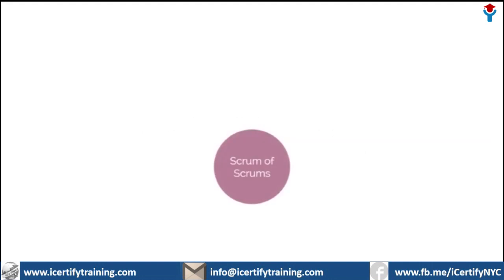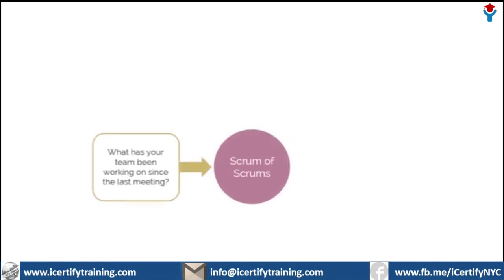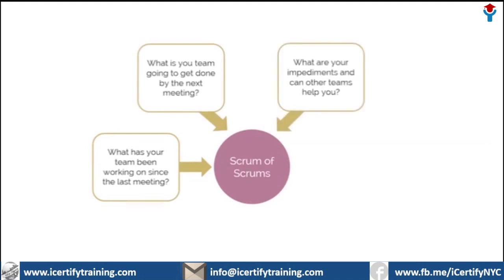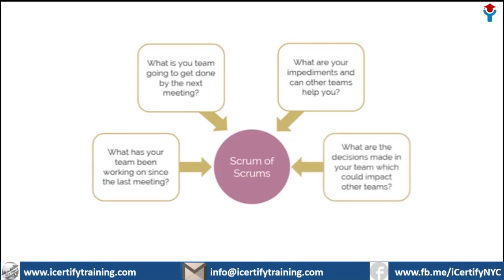Here we can see what questions are addressed in the Scrum of Scrums: What has your team been working on since the last meeting? What is your team going to get done by the next meeting? What are your impediments and can other teams help you? What are the decisions made in your team which could impact other teams? Typically, any inter-team issues are addressed by the interested parties in a session meeting following the Scrum of Scrums, which the Chief Scrum Master facilitates.